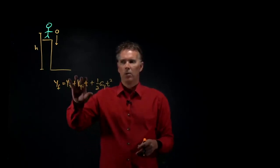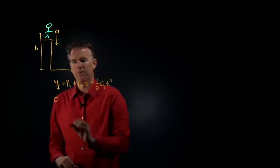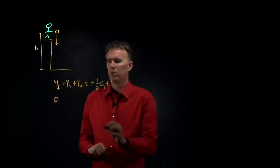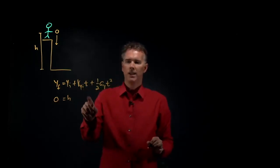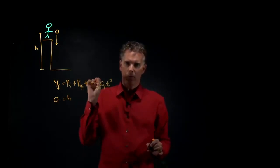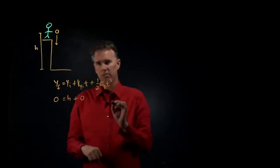In our case, y_final is at the ground, so that becomes zero. y_initial is where we started, height h. v_y_initial is the initial speed at which you throw it, but if you just drop it from rest, that is zero.